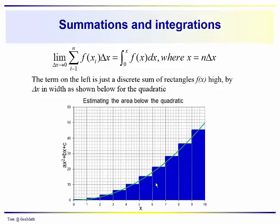These rectangles are f(x) high by delta x in width, and they give us an area. Basically, we're getting an estimate of what the area under the curve is when we sum together all these little rectangles.